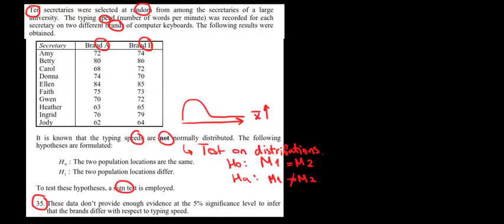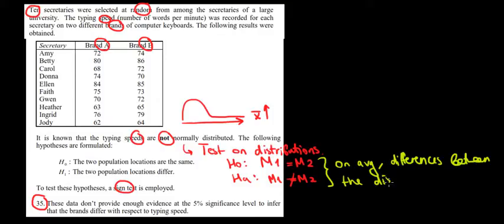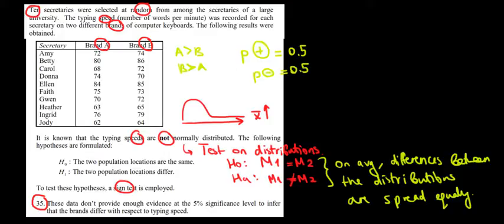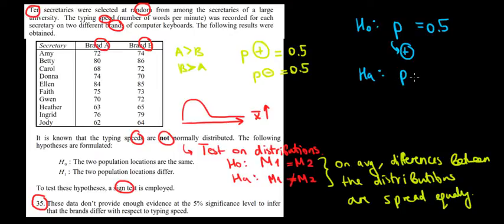What does it mean to have similar medians? When we have similar medians, we're saying that on average the differences between the distributions are spread equally — sometimes we will have higher values for brand A and in other cases higher values for brand B. This tells us that on average the proportion of positive differences is going to be around 50% and the proportion of negative differences also around 50%. Another way of writing the sign test hypothesis is: the proportion of positive differences P equals 0.5, and under the alternative, P is not equal to 0.5.